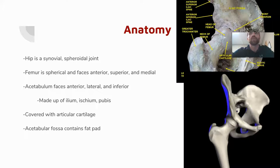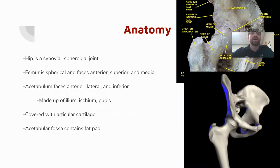Thankfully there's a ligament that provides significant anterior stability. Overall, the hip is far more stable than the glenohumeral joint, partly due to compression from body weight above. The acetabular fossa contains and transmits the ligamentum teres and also contains a fat pad with blood vessels and sensitive neurovascular structures.